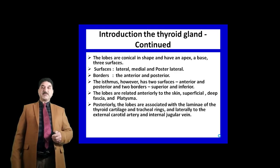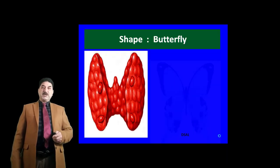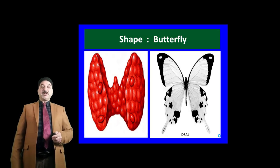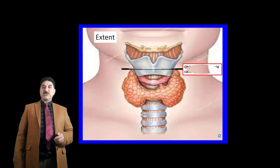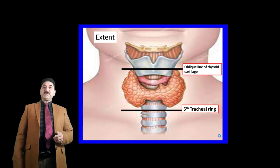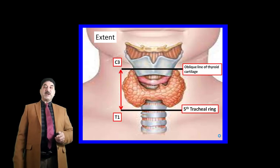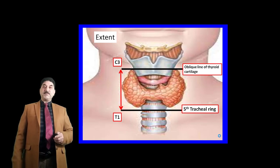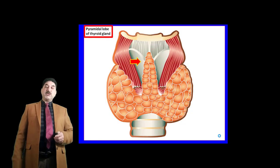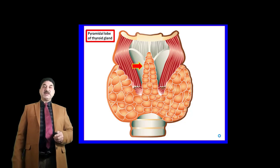The thyroid gland is butterfly-shaped: its two lobes correspond to the wings of the butterfly and the isthmus corresponds to the body. The lobes extend superiorly from the oblique line of the thyroid cartilage to the fifth tracheal ring, corresponding to levels C3 to T1. The isthmus rests on the second and third tracheal rings. The pyramidal lobe originates from the isthmus and is present in roughly 50 percent of thyroid glands.